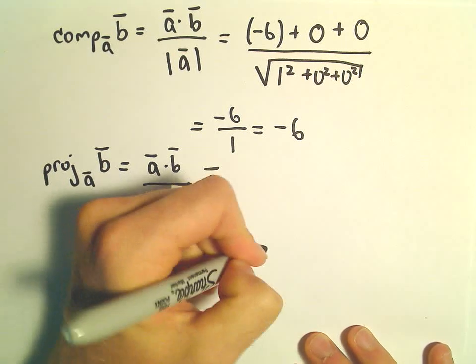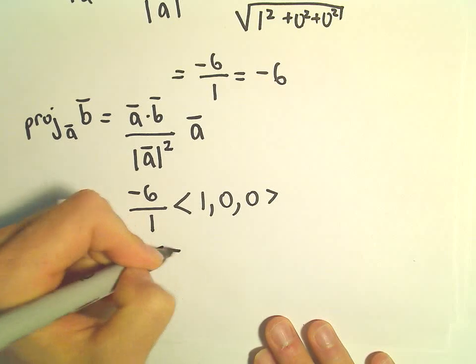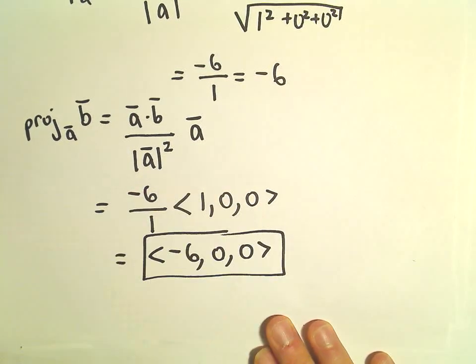And then we just multiply that by vector A, which again just had components of 1, 0, 0. So if we multiply, we'll be left with negative 6 comma 0 comma 0 as our vector projection.